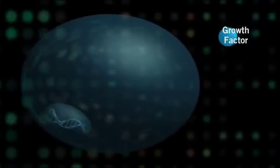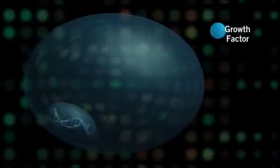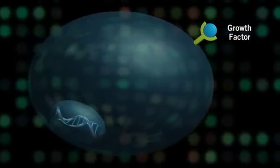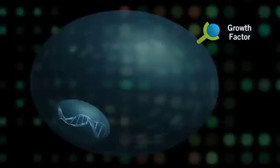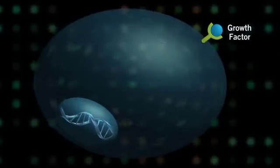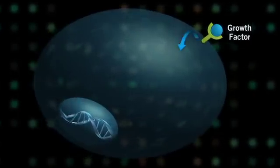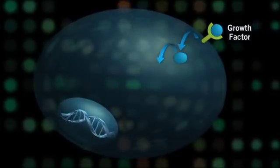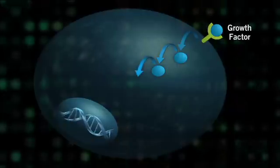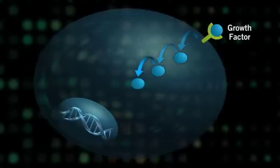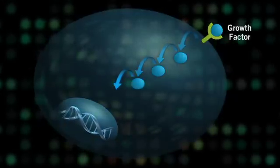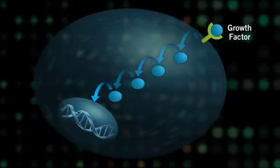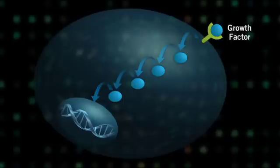Normally, the Ras-Raf pathway is activated by growth factors binding to receptors on the cell's surface. This starts a cascade of events inside the cell in which a signal is passed from one protein to another. Ultimately, the signal ends up in the cell's nucleus, where the DNA is found.